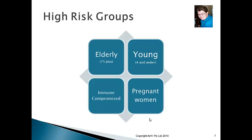Businesses that target the elderly or the young must have food safety programmes with extra controls on top of what a regular restaurant or cafe would need. The third high-risk group is pregnant women. There is a specific food poisoning bacteria called Listeria monocytogenes that causes spontaneous miscarriages as one of its symptoms. So pregnant women who get food poisoning from this bacteria may not just have typical symptoms — they could lose their baby.